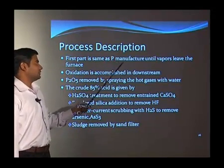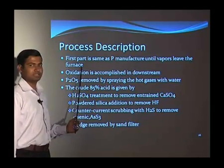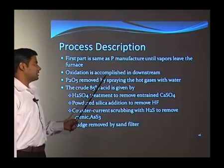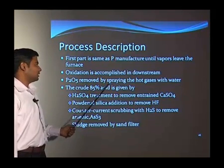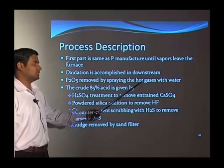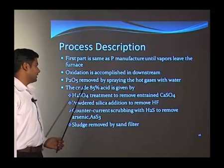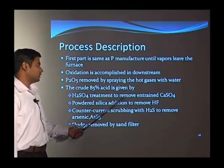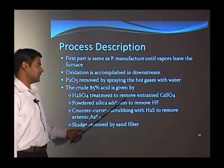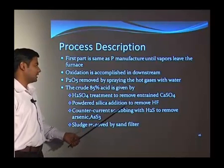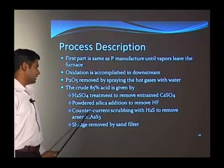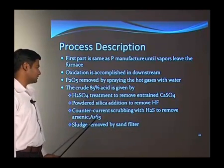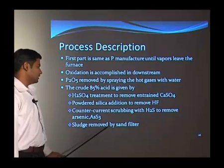The first part is the same as the phosphorous manufacture until vapors leave the furnace. Oxidation is accomplished in the downstream. Then the phosphorous pentoxide is removed by spraying the hot gases with water. The crude 85 percent acid is given H2SO4 treatment to remove entrained calcium sulphate. Then powder silica addition removes hydrofluoric acid. Counter-current scrubbing with H2S removes arsenic. The sludge is removed by sand filter.